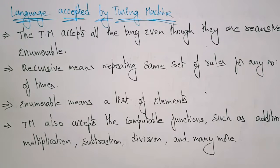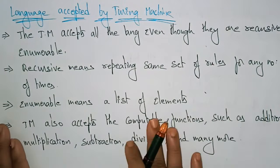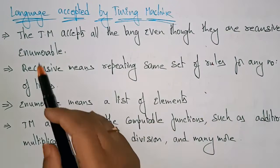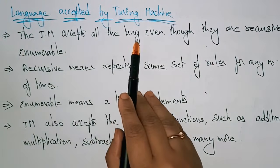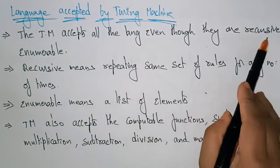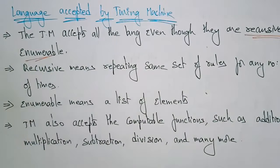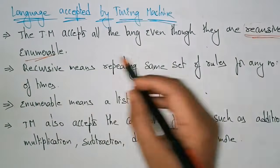This is one of the important concepts. If you see this example, then Turing machine problems can be easily understood. The Turing machine accepts all languages, even though they are recursively enumerable.